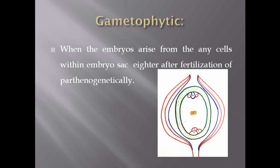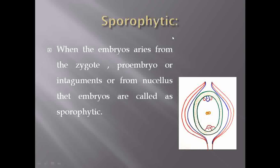Whenever embryo is formed from cells present in the embryo sac, or if it is developed parthenogenetically, that type of polyembryony is categorized as gametophytic polyembryony according to scientist Jacol. The second type proposed by Jacol is sporophytic polyembryony.